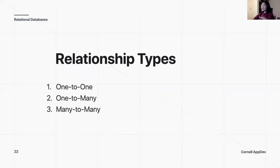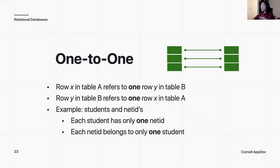Let's talk about a couple of different relationship types. We can have one-to-one, one-to-many, or many-to-many. One-to-one means row X in table A refers to one and only one row Y in table B, and vice versa — row Y in table B refers to one and only one row X in table A. That really means one row is a unique identifier for another row in another table. The example here is students and net IDs — each student has only one net ID, and each net ID can only belong to one student.